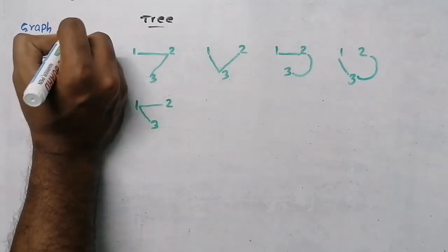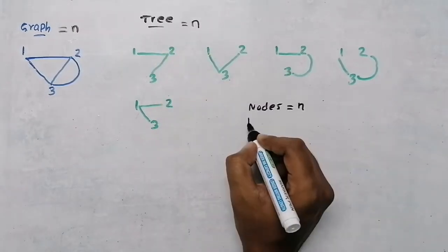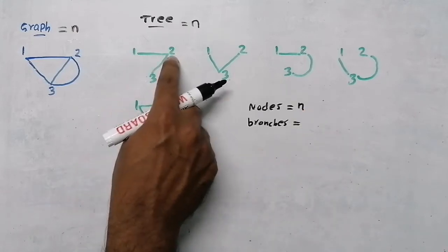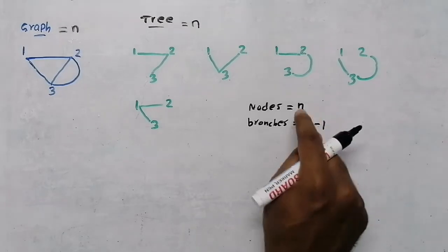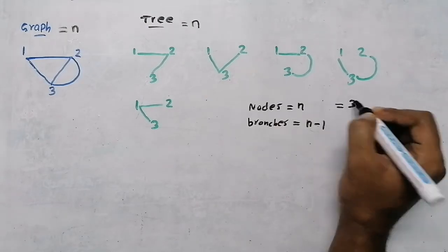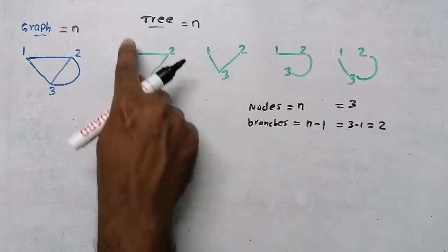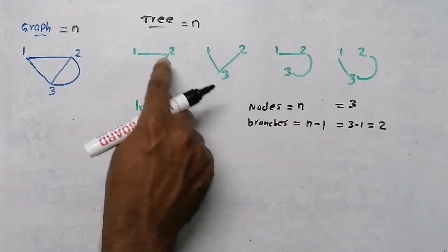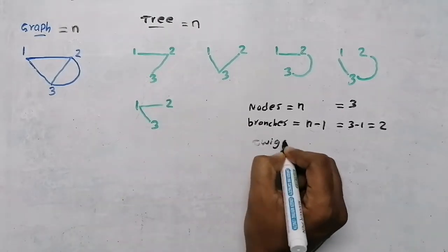For a tree: if the graph has n nodes, the tree will also have n nodes. The number of branches in a tree equals n minus 1. So if there are n nodes, there will be n−1 branches. For this example with three nodes, the number of branches is 3−1 = 2. See: one branch and two branches — two branches are there.